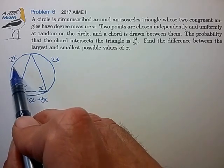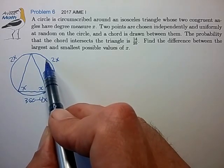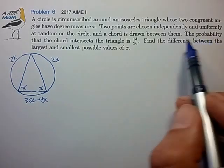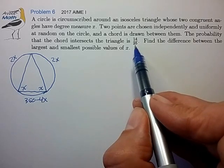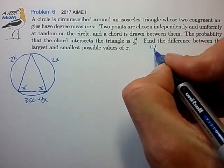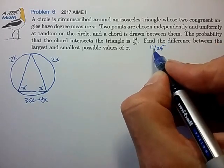I get the sense that it's probably easier to calculate the probability that the chords do not intersect. So if the probability that they intersect is 14 over 25, the probability that they don't intersect is 11 over 25. So let's calculate that instead.